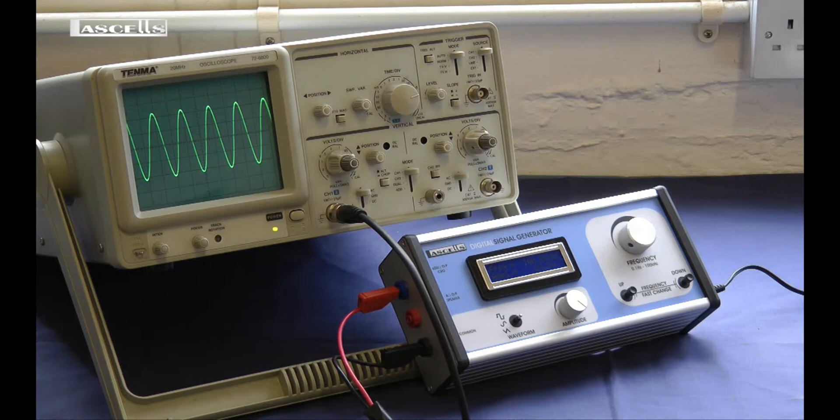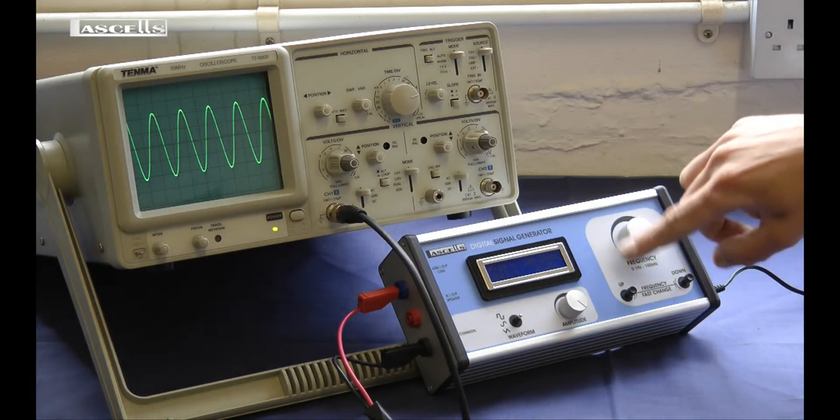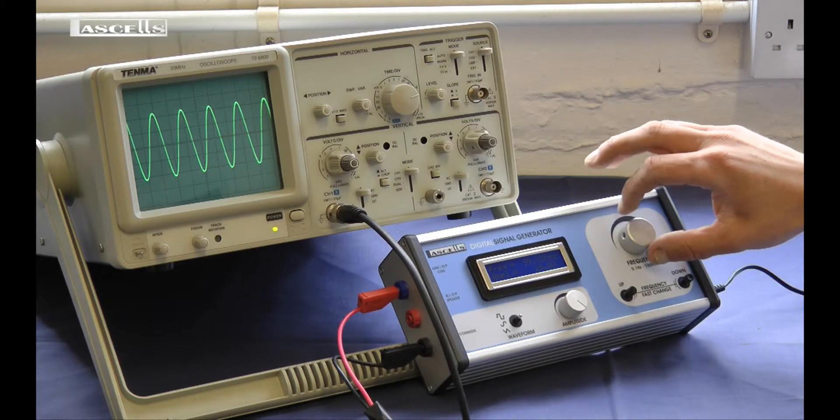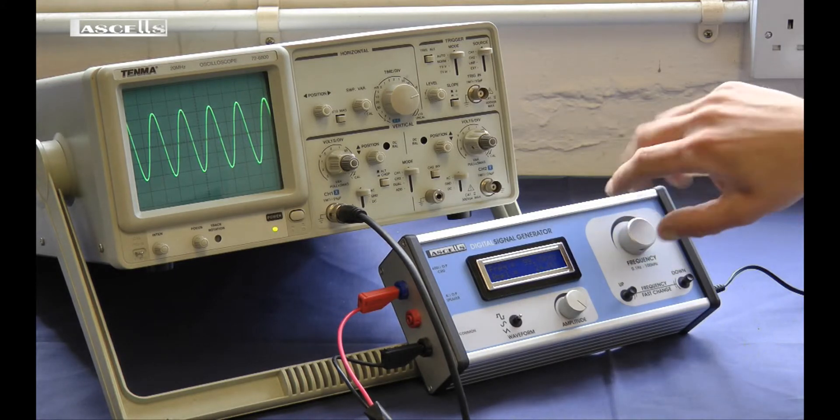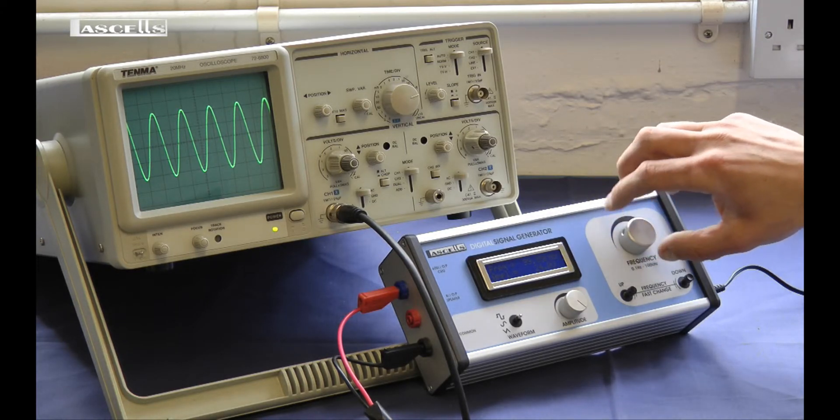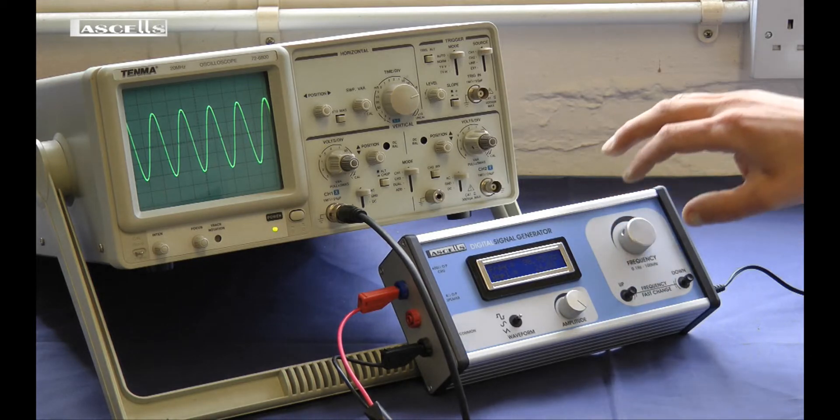The second way of adjusting the frequency is using the fine adjust knob. That gives you steps of 0.1 kHz for every small notch on the dial. This allows you to adjust the frequency to exactly what you want once you've got the rough frequency set using the fast change.